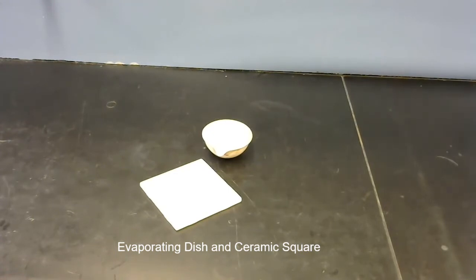The square there is just a ceramic tile, and you would use that to put something hot on it so that it wouldn't damage the counter.